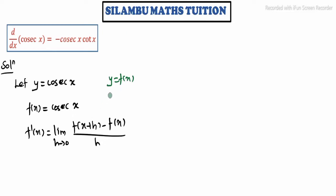Now f of x ka na value irukku, so find f of x plus h ka na value. So f of x plus h is equal to — in the place of x, apply x plus h. So cosecant of x plus h.